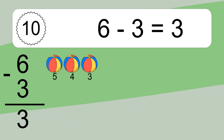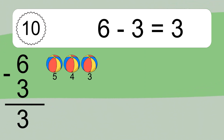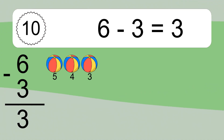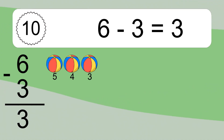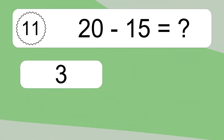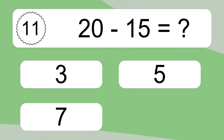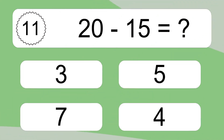6 minus 3 equals 3. Let's count it: 5, 4, 3. 20 minus 15 equals what?